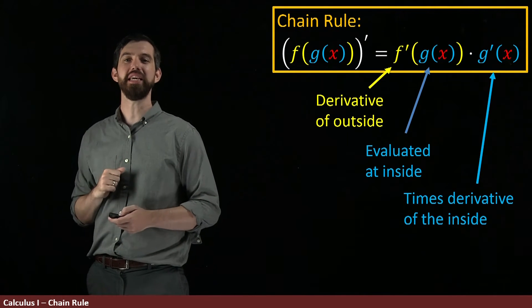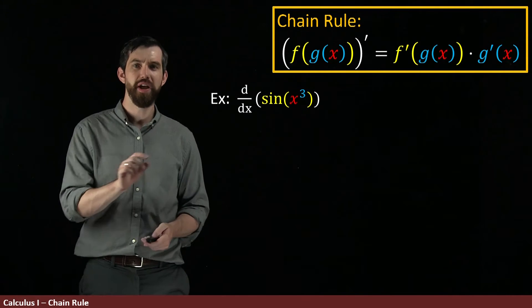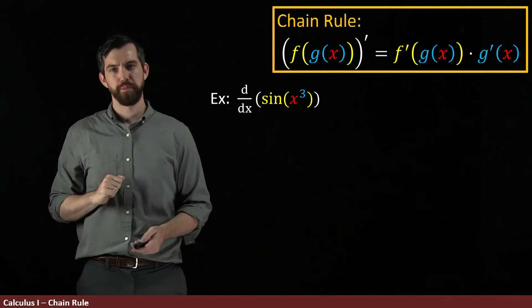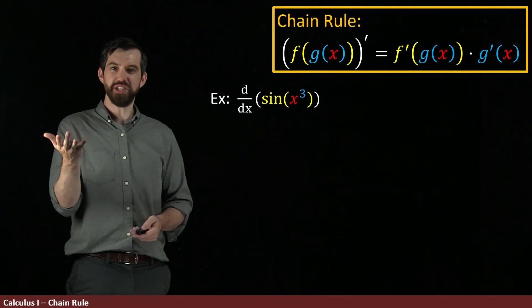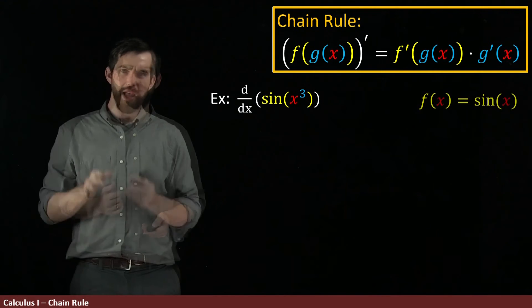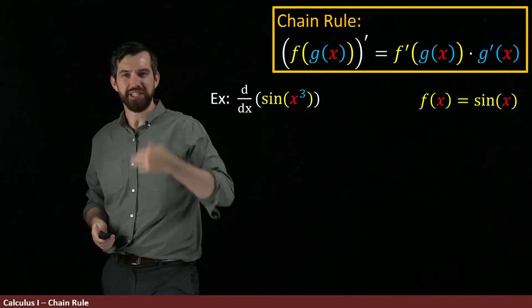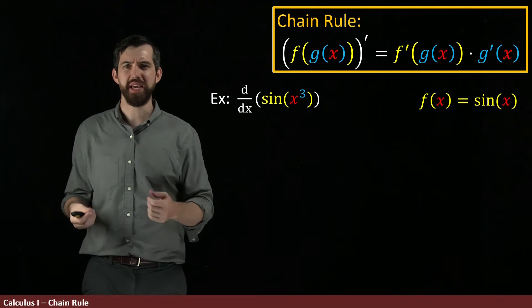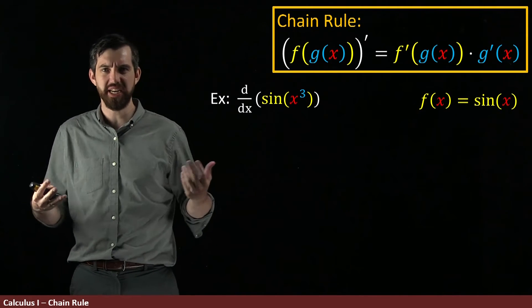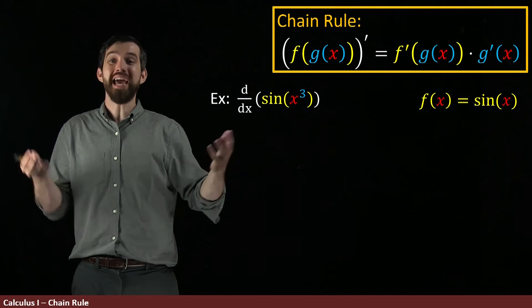Okay, so let's see an example of this. I want to focus on the derivative of sine of x cubed. So my outside function, this is going to be the f. This is just sine of x. And note carefully, when I write f of x is sine of x, the x here is just a placeholder. It could be f of 7, f of 17, f of 17 squared, f of 17 cubed. It could be anything.